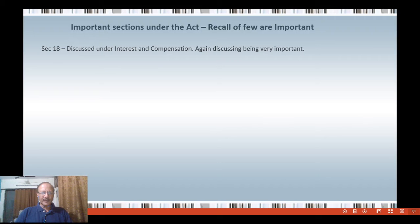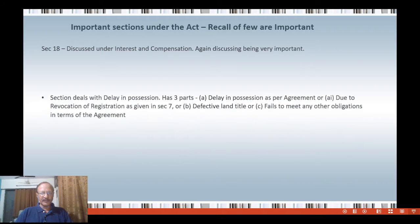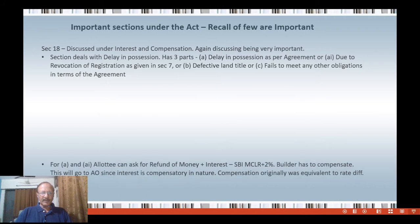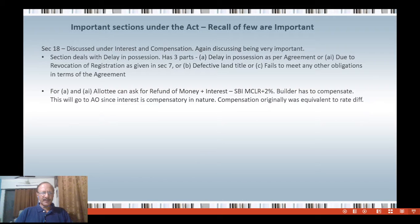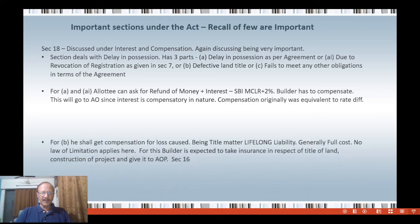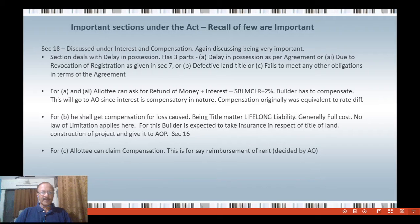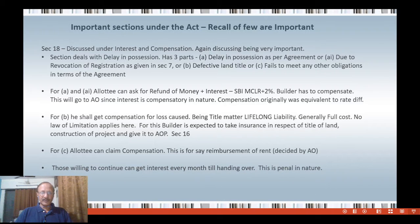Section 18 is by far the most important section for us. This slide has been discussed earlier when we were discussing the role of adjudicating officer or compensation, but we shall discuss it once again. Section 18 deals with delay in possession and has three parts: the first part is delay in possession as per agreement or due to revocation of registration as given in section seven; the second part is defective land title; and the third part is failure to meet any other obligation in terms of the agreement.